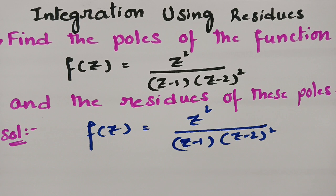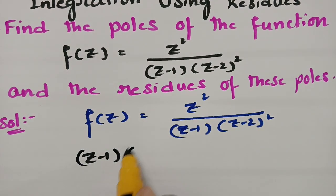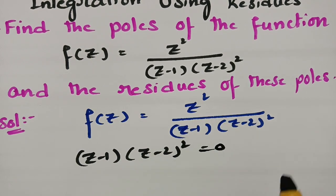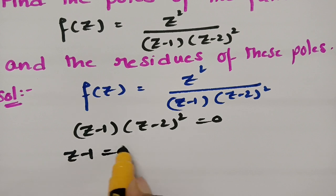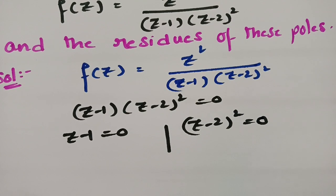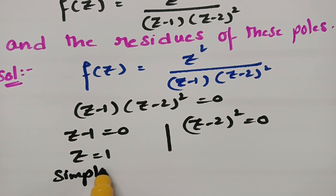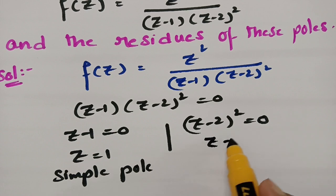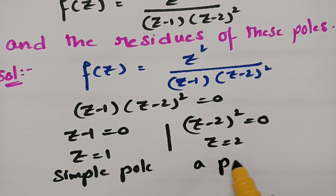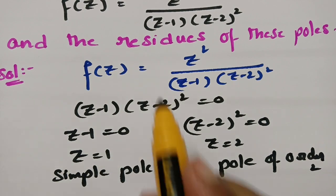To find the poles, we equate the denominator to zero: (z-1)(z-2)² = 0. Setting z-1 = 0 gives z = 1, which is a simple pole. Setting (z-2)² = 0 gives z = 2, which is a pole of order 2.